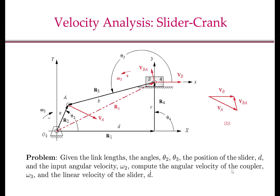The velocity kinematics problem for the slider crank mechanism can be formally stated as follows. Given the link lengths, the angles theta 2 and theta 3, the position of the slider denoted by d, and the input angular velocity omega 2, we want to compute the angular velocity of the coupler, denoted by omega 3, and the linear velocity of the slider along the x direction, denoted by d dot. Note that implicit in the velocity kinematics problem statement is the fact that we have already solved the position kinematics problem — that is, we know theta 3 and d.